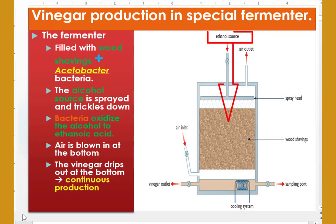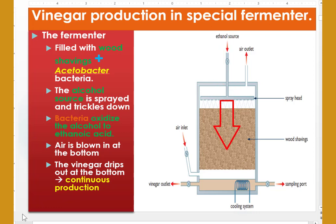The alcohol source must be sprayed in from the top and it trickles down through the wood shavings. When this ethanol alcohol trickles down through the wood shavings, acetobacter gradually oxidizes the alcohol to ethanoic or acetic acid. This special bacteria needs air.